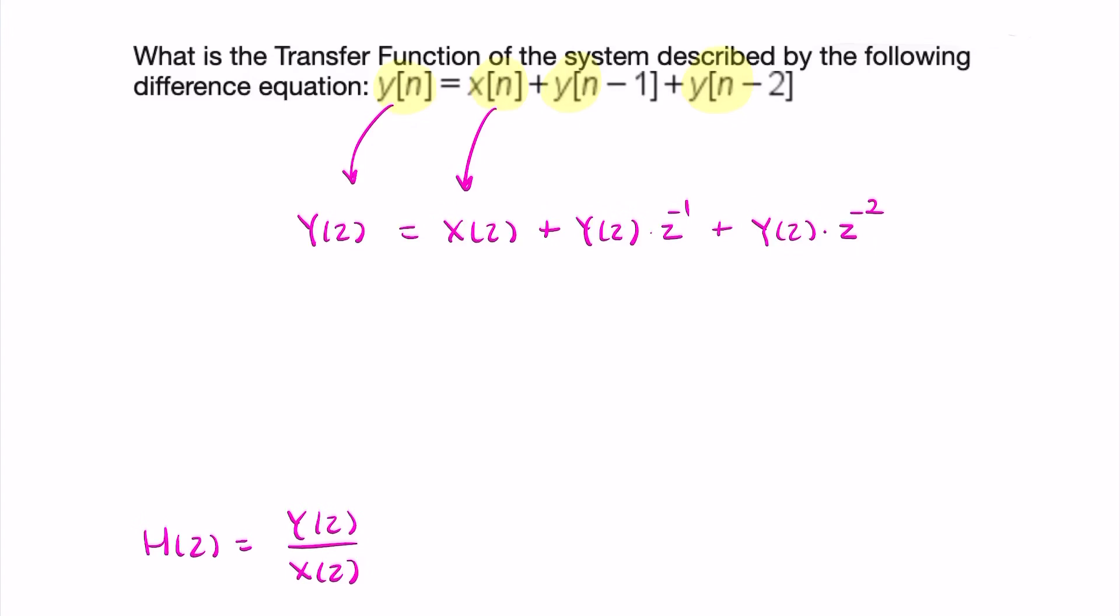Now what we want is to write a ratio of y of z to x of z. So it would help if all of these y of zs were on the same side of the equation. So I will move these across. So I can say y of z, common factor, 1 minus z minus 1 minus z to minus 2 equals x of z.